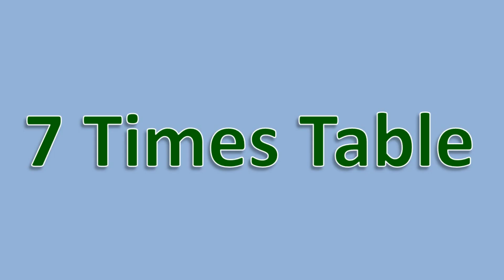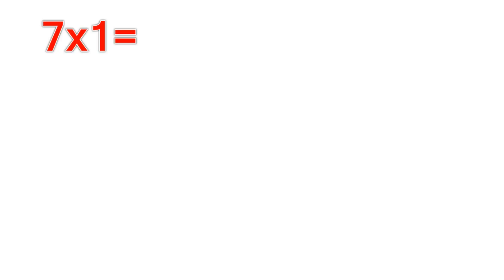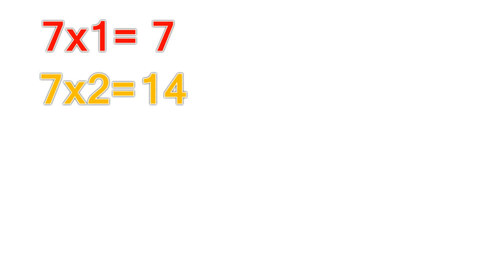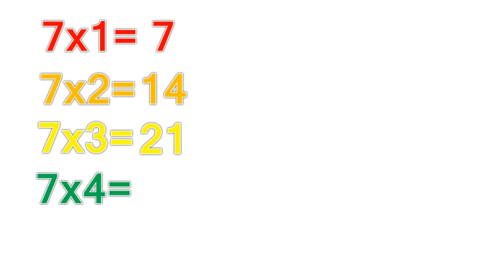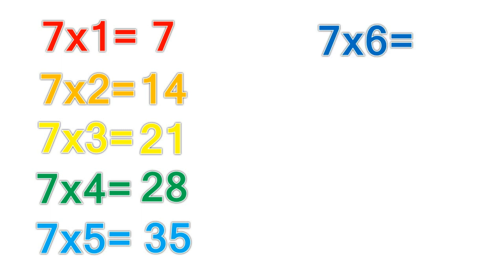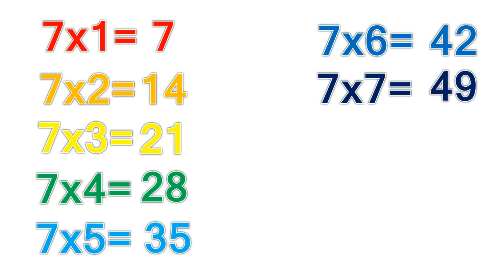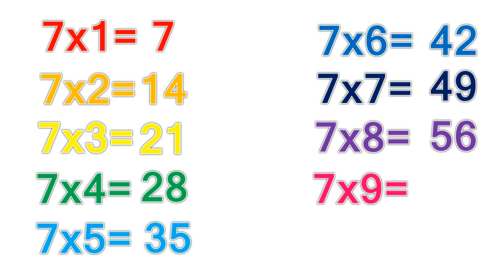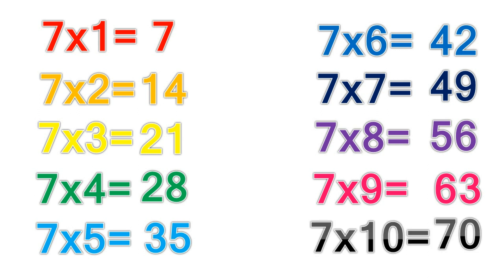7 times table. 7 times 1 equals 7. 7 times 2 equals 14. 7 times 3 equals 21. 7 times 4 equals 28. 7 times 5 equals 35. 7 times 6 equals 42. 7 times 7 equals 49. 7 times 8 equals 56. 7 times 9 equals 63. 7 times 10 equals 70.